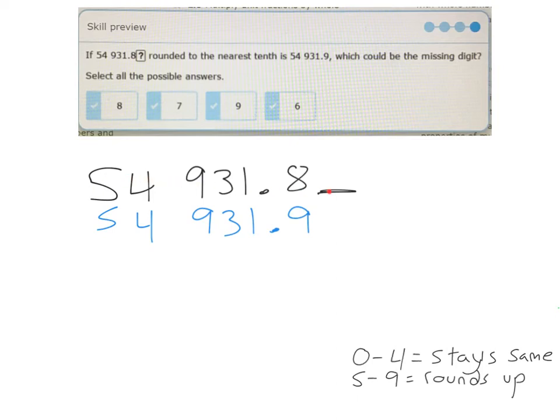So written here, what we had before with our missing digit at the end, and then what we end up with after we round, 54,931.9. So which digit or digits could we put in here in order to end up with 9 tenths? So before, we had 8.